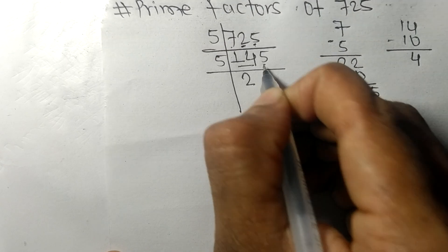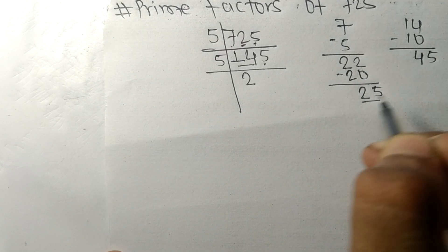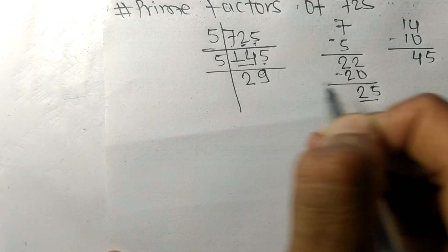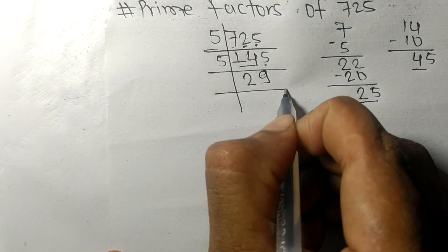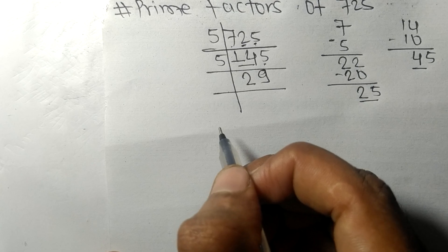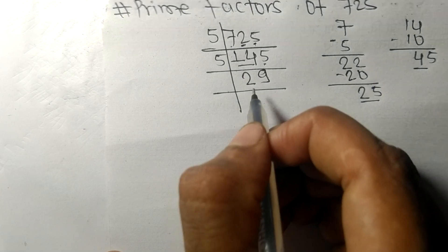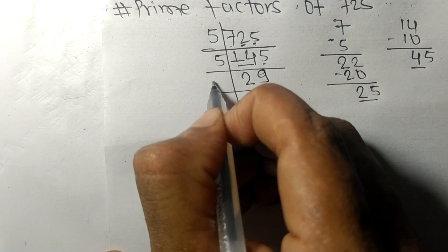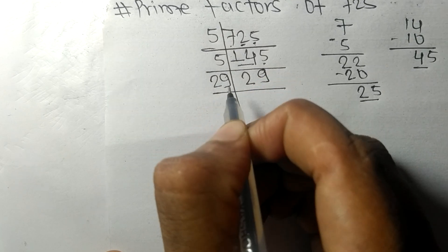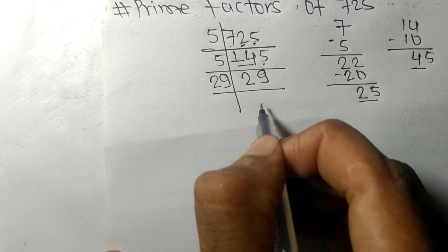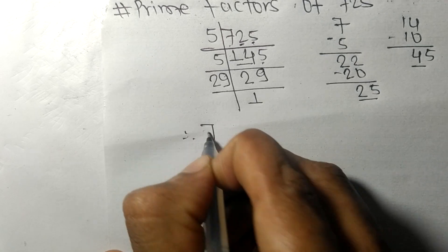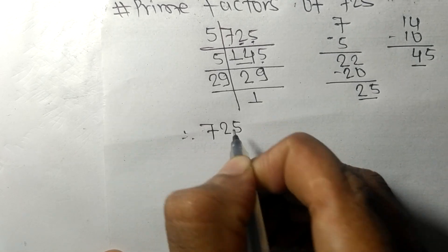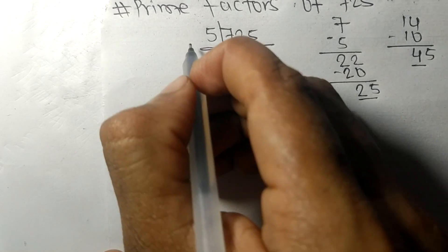Then we have 45, so 5 times 9 equals 45. Now we got 29 which is our prime number, so it is divisible by 29 only, and on dividing we get 1.